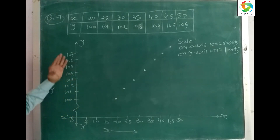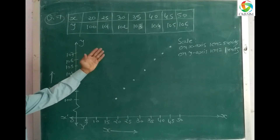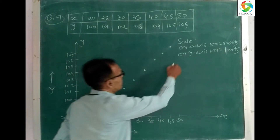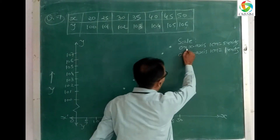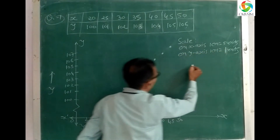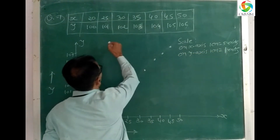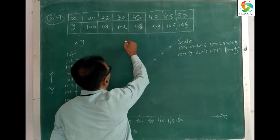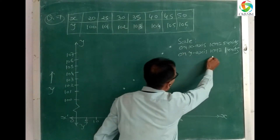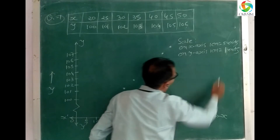On the x-axis, values are 20, 25, 30 — so the x-axis scale is 5 units. On the y-axis, values go 100, 101, 106 — so the y-axis scale is 1 unit.